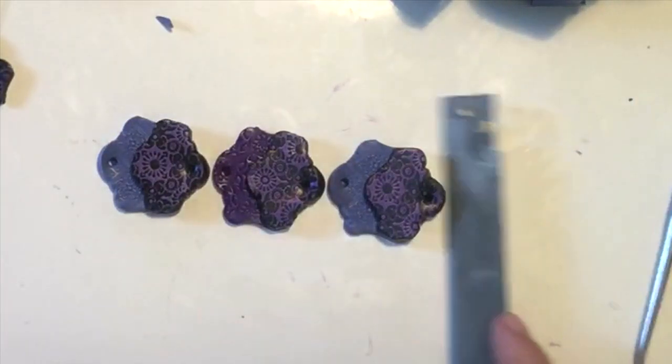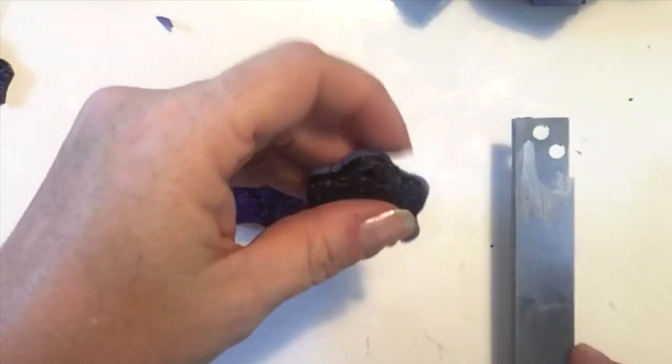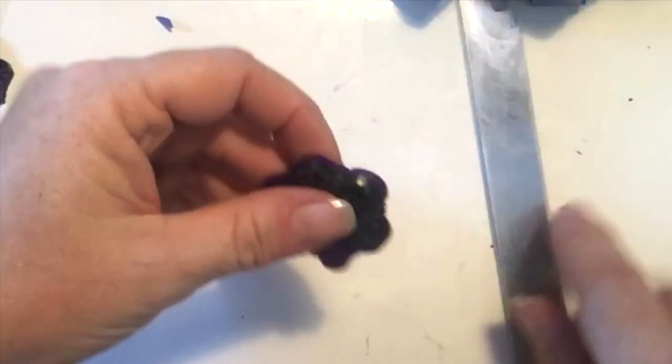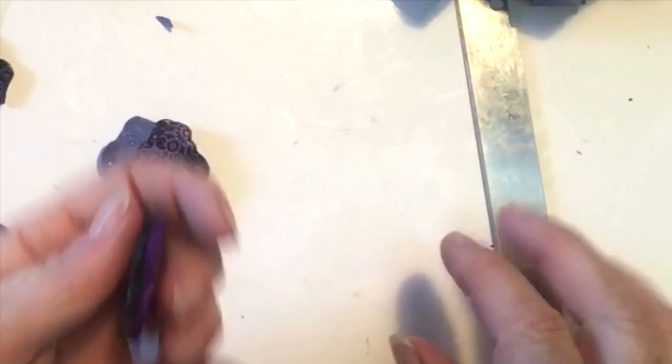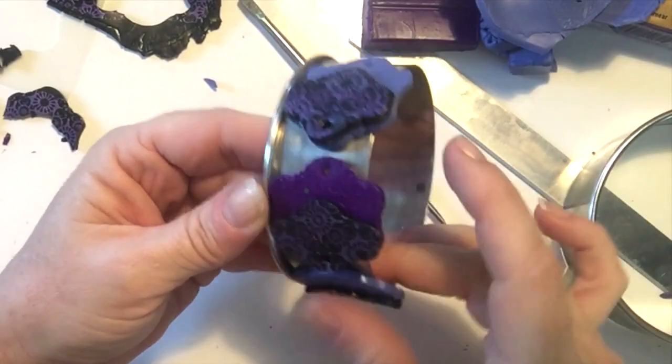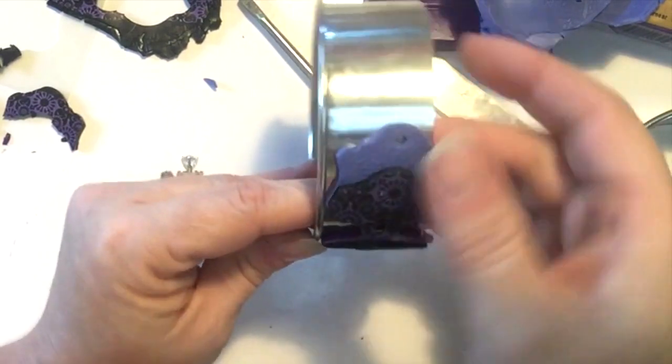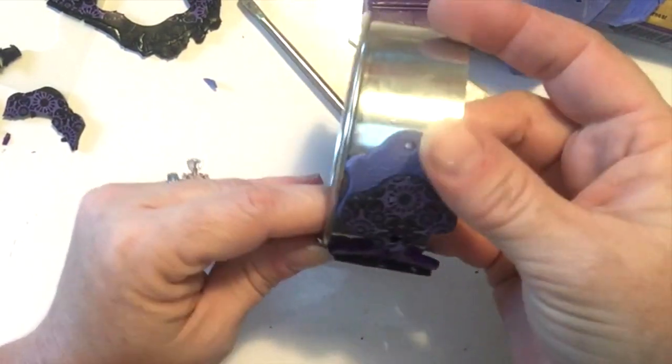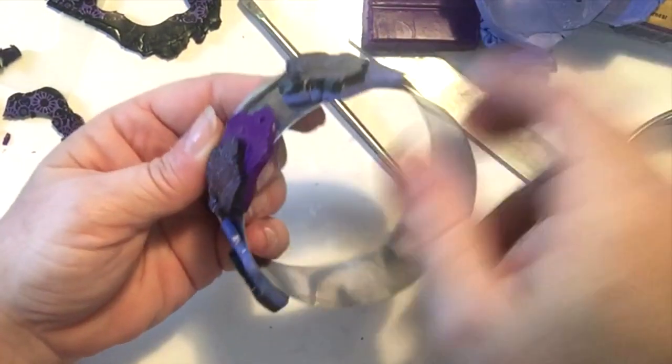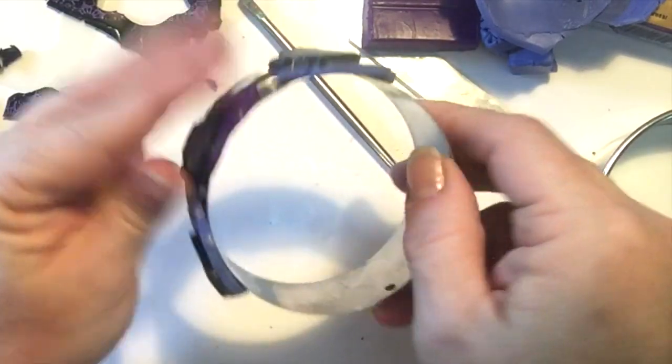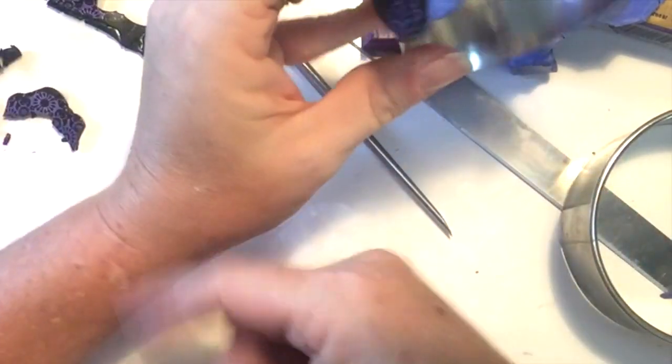I made a hole for my jump rings on opposite sides of each of the pieces. To give them a bit of a curve, I baked them on one of my large circle cutters. You could use a can or any curved surface. Bake them according to the manufacturer's instructions and let them cool.